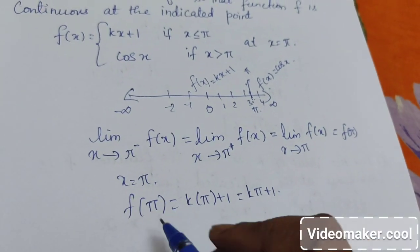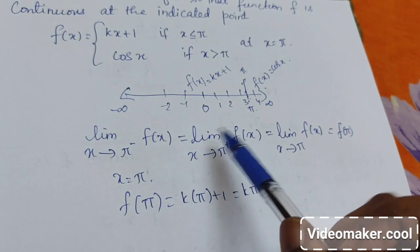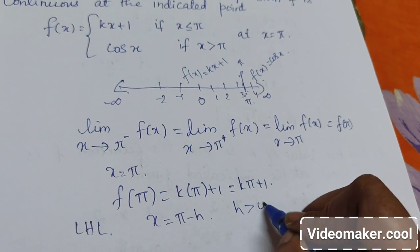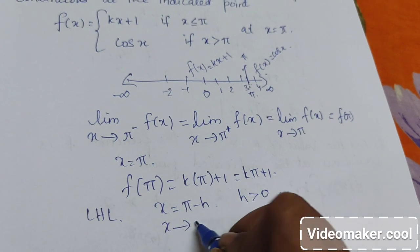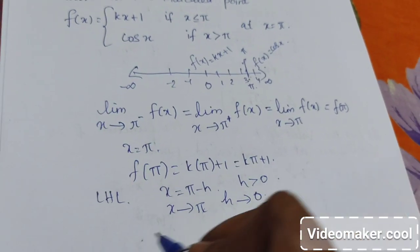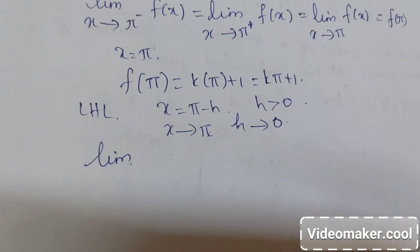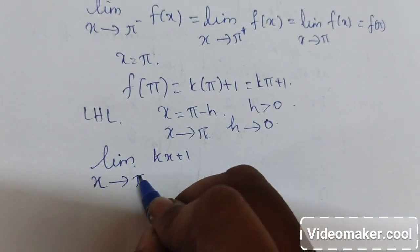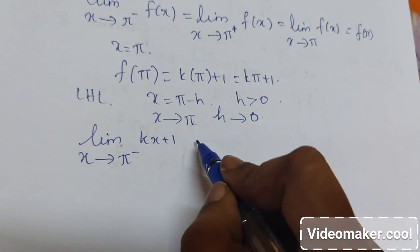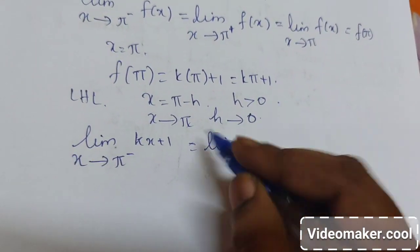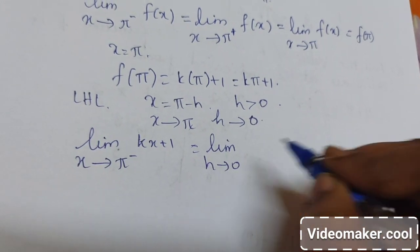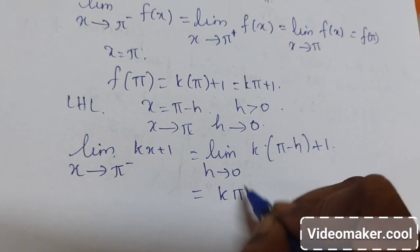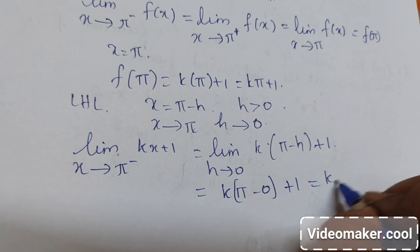We will calculate the left hand limit. In the left hand limit, the elements will be pi minus h, where h is a small positive real number. As x tends to pi, h tends to 0. So the limit of the function kx plus 1 as x tends to pi from the left — replacing x with pi minus h — gives k(pi minus h) plus 1, and after substituting the limit h equals 0, we get k·pi plus 1.